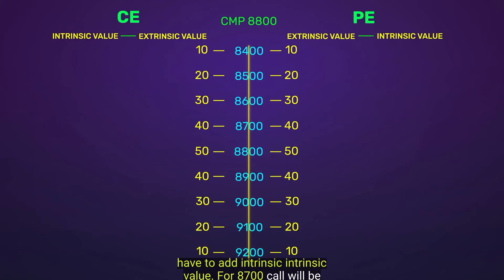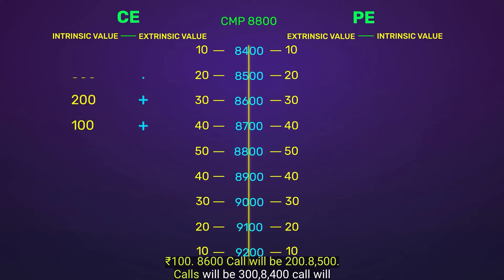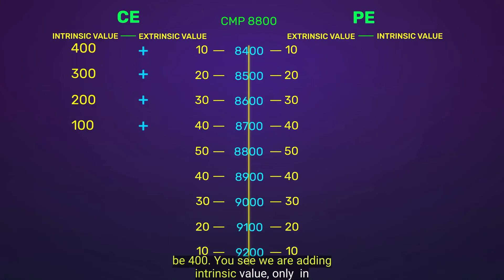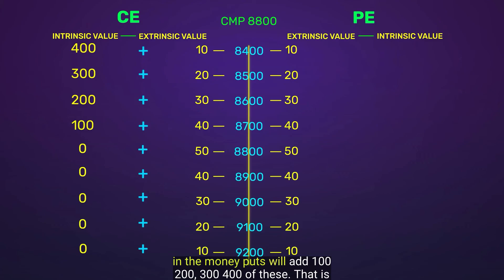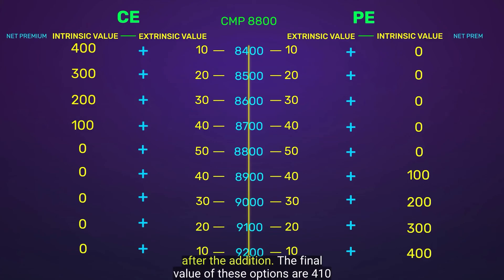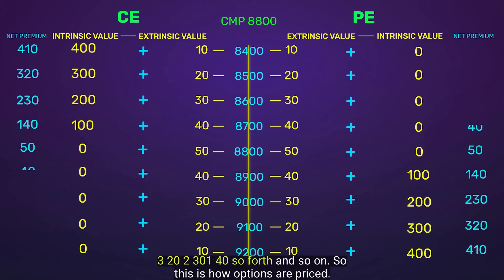The intrinsic value for the 8,700 call will be 100 rupees, for the 8,600 call it will be 200, for the 8,500 call it will be 300, and for the 8,400 call it will be 400. We add intrinsic value only to in the money options, whereas OTM options have no intrinsic value — just extrinsic value. The same logic applies for in the money puts and out of the money puts. In the money puts add 100, 200, 300, and 400 rupees respectively, giving final values of 410, 320, 230, and 140. This is how options are priced.